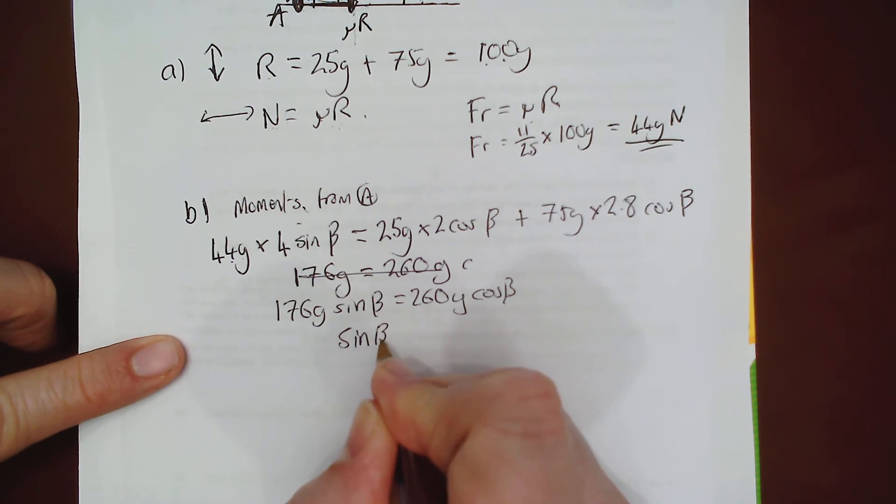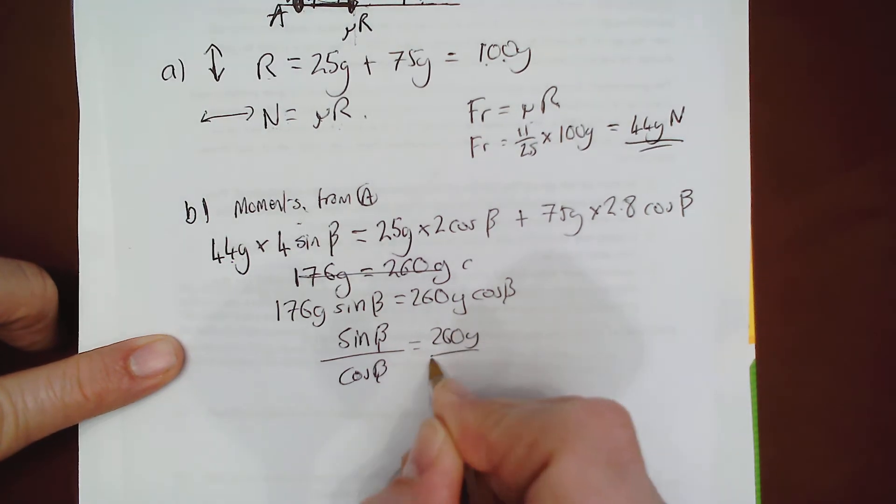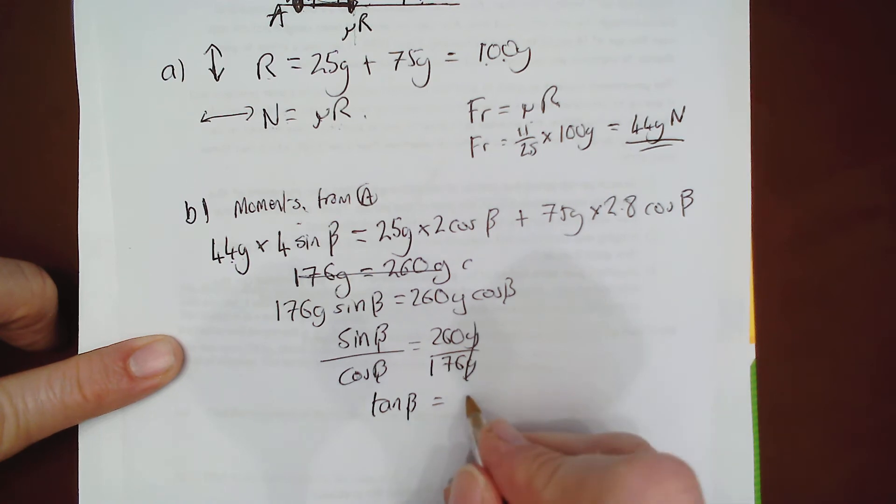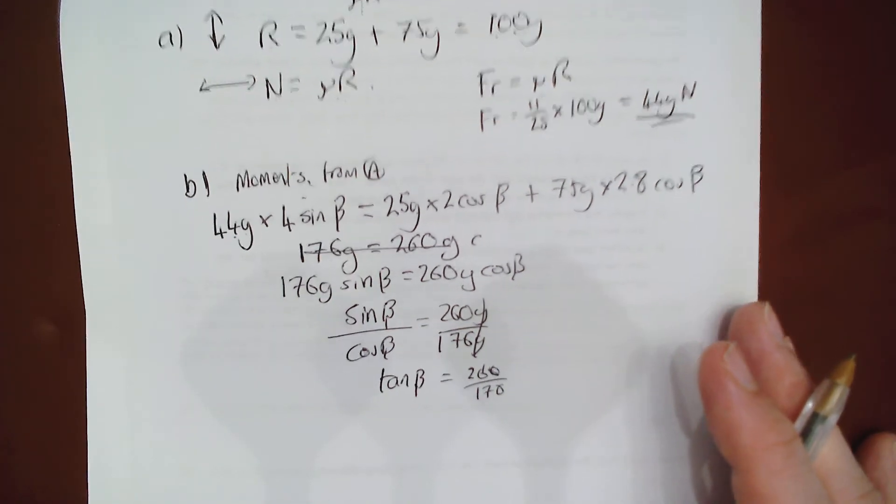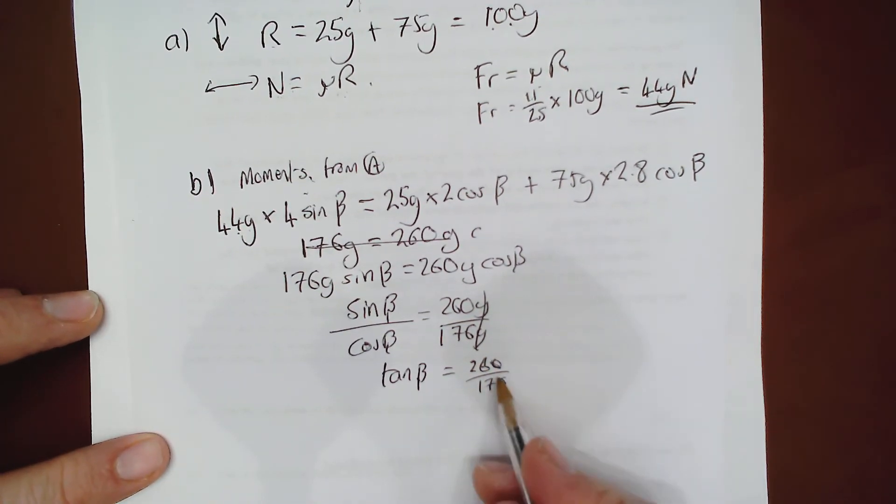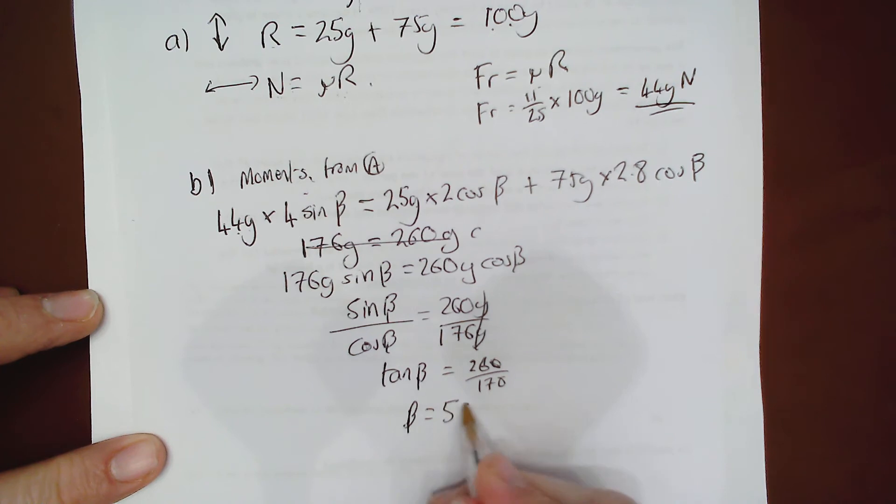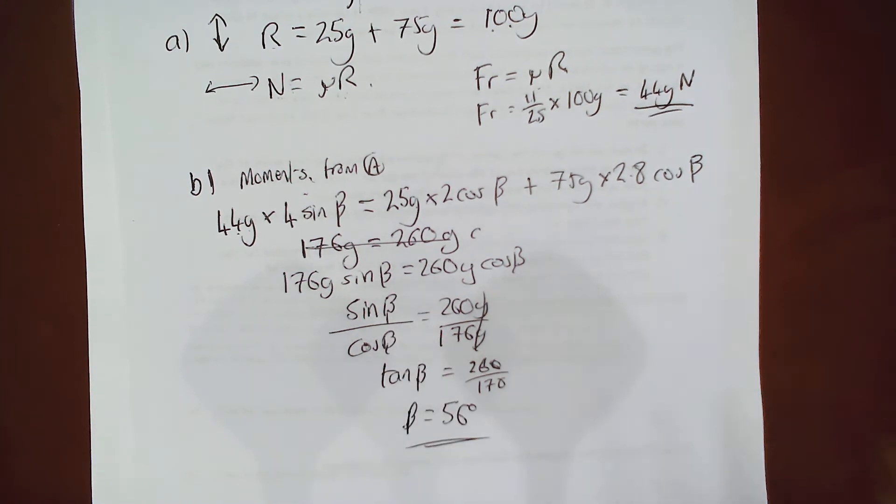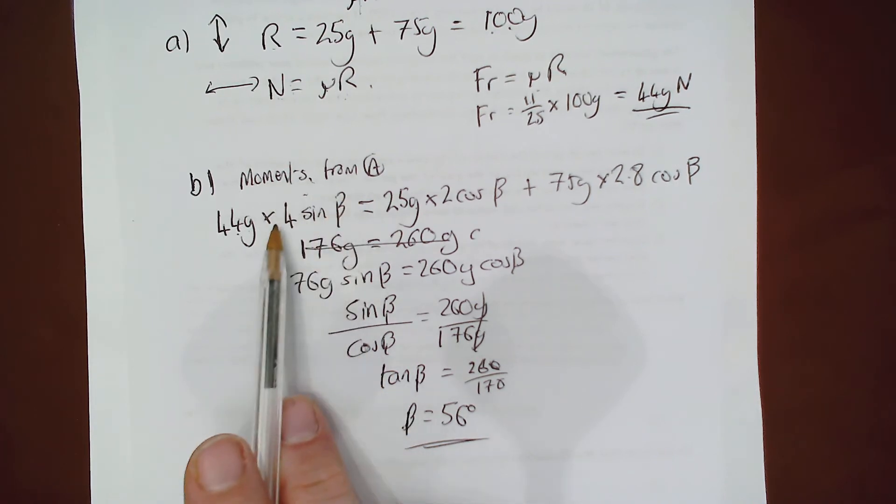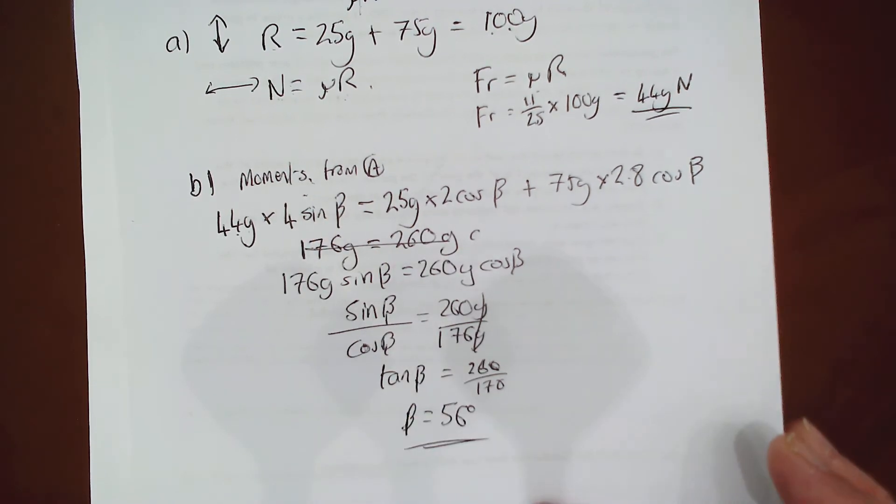As it's sine over cos, tan beta equals 260 over 176. So I can put that into my calculator. Do my arc tan of 260 over 176. And to the nearest degree beta comes out as 56 degrees. So I've done this bit by moments. And my big tip here with the moments is practicing those perpendicular distances from the pivot. That's crucial.